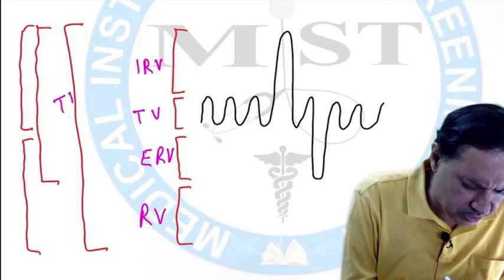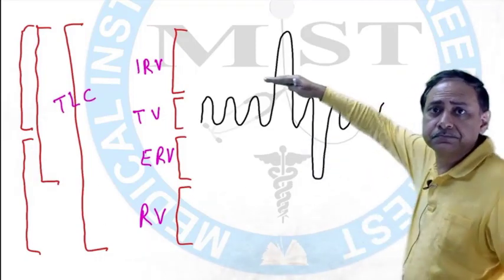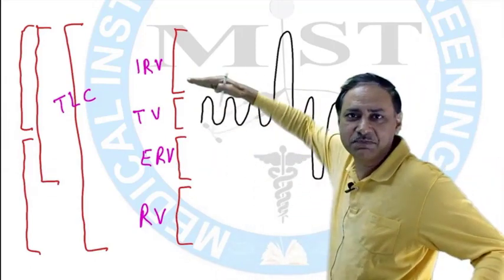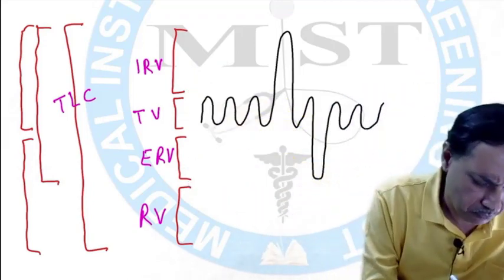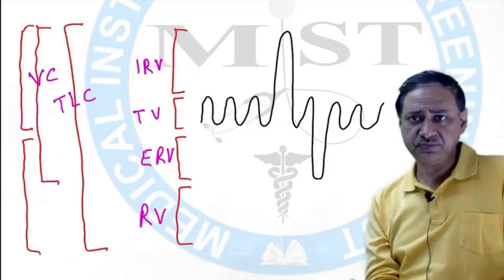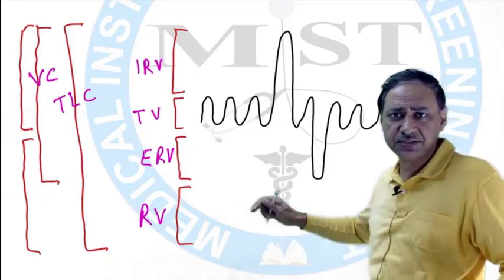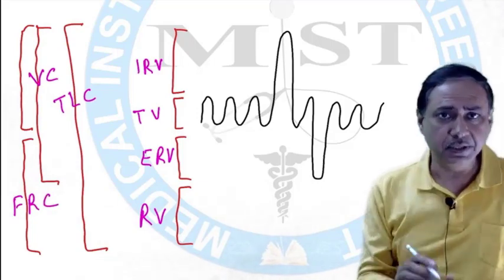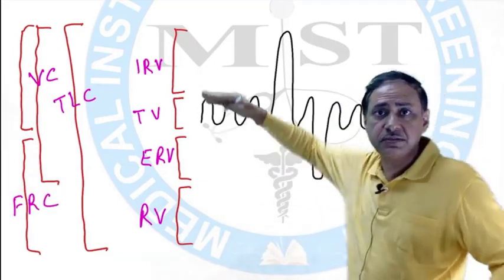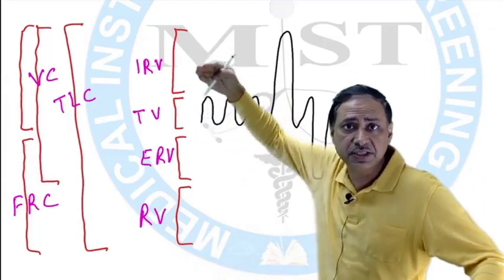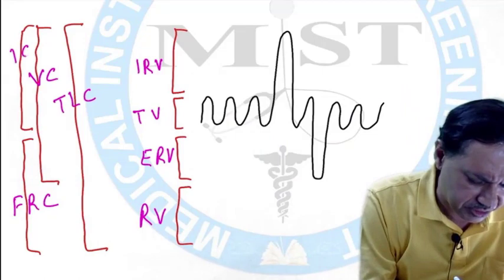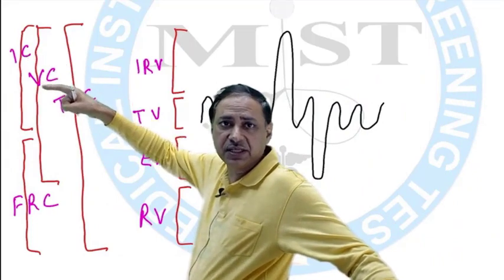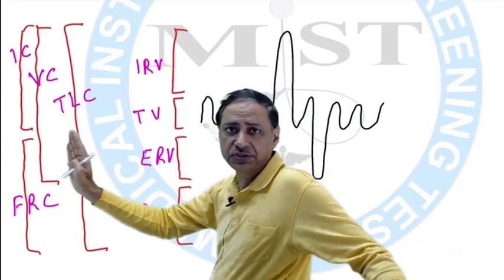So this is Total Lung Capacity — this plus this plus this. Vital Capacity — this plus this plus this. The bottom two: Functional Residual Capacity. And the top two: Inspiratory Capacity. FRC, Inspiratory Capacity, Vital Capacity, Total Lung Capacity. Four volumes and four capacities.